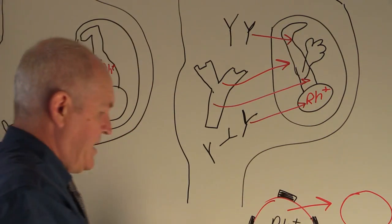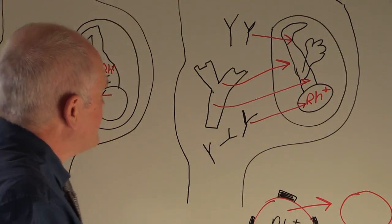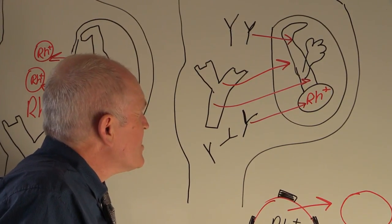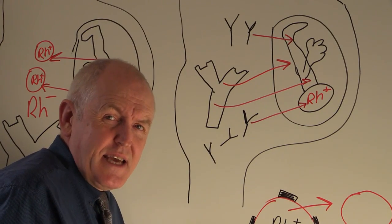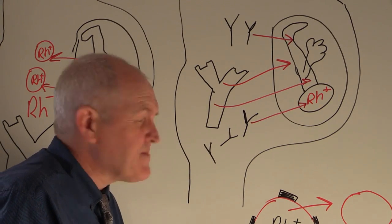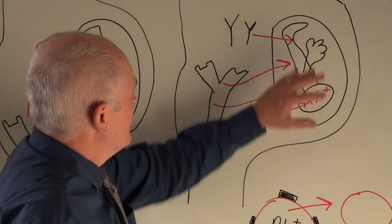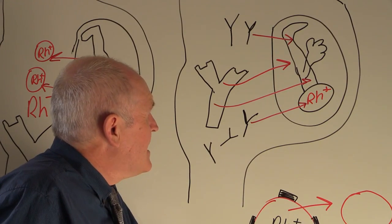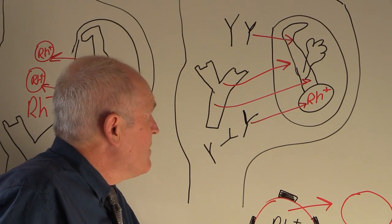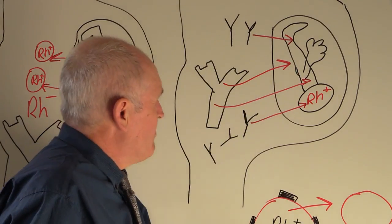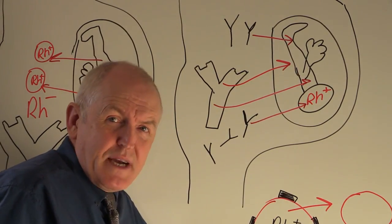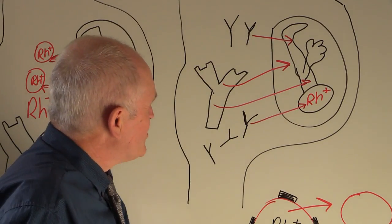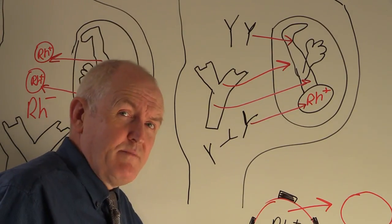But the downside is that the Rhesus factor antibodies can also migrate into the baby's circulation. These Rhesus factor antibodies will start to agglutinate and haemolyse the fetal red cells. The baby will develop haemolysis, which will make the fetus anaemic and reduce oxygen delivery to all parts of the baby's body.